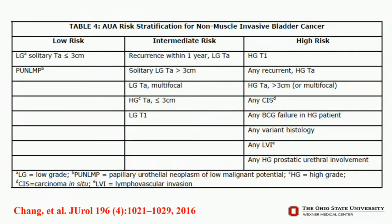In approaching the management of non-muscle invasive disease, there's been inertia towards a risk-based strategy for diagnosis, treatment, and surveillance. Low risk non-muscle invasive disease is essentially that first-time tumor that's low volume, low grade TA — it also includes pun lump. Intermediate risk includes recurrent low-grade TA, high-volume low-grade TA, multifocal low-grade TA, low-volume high-grade TA, and the very rare low-grade T1.